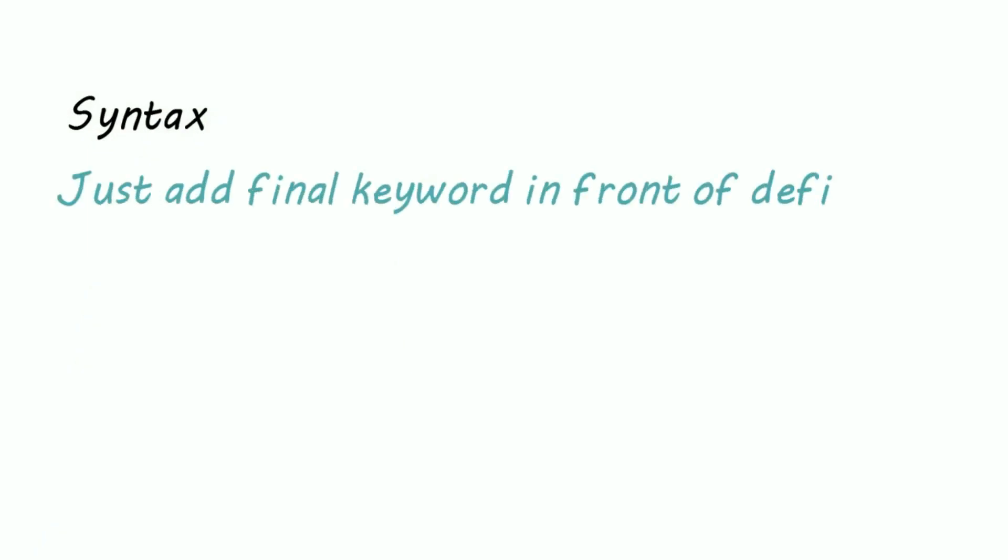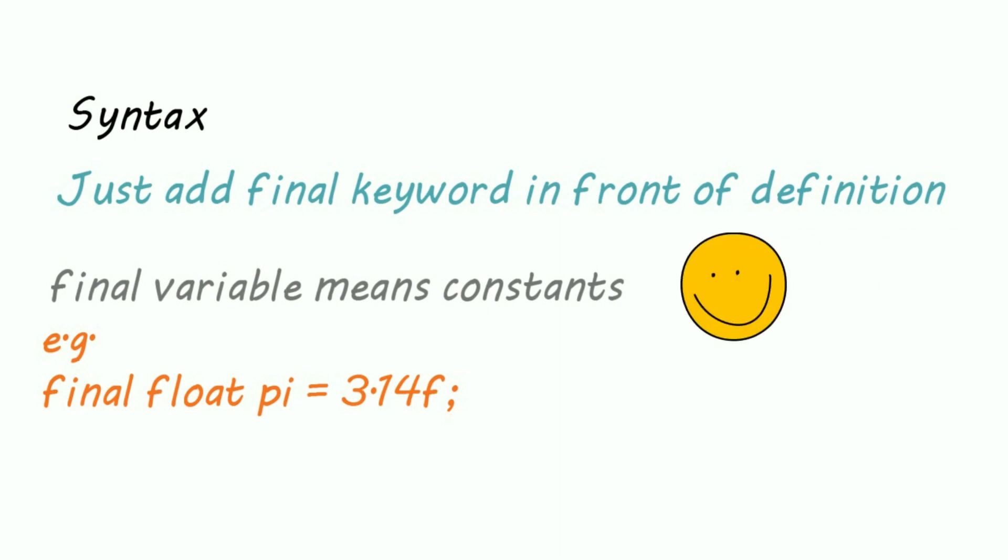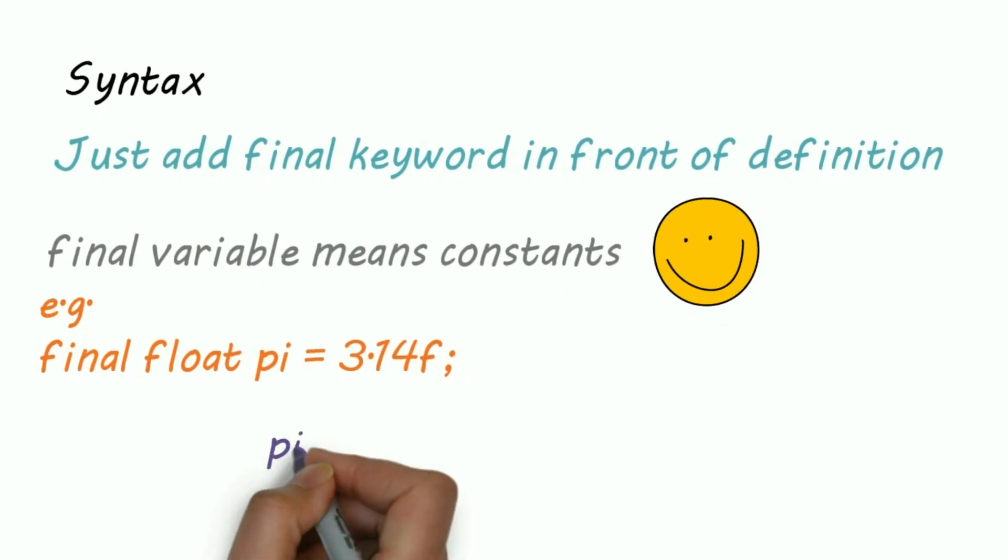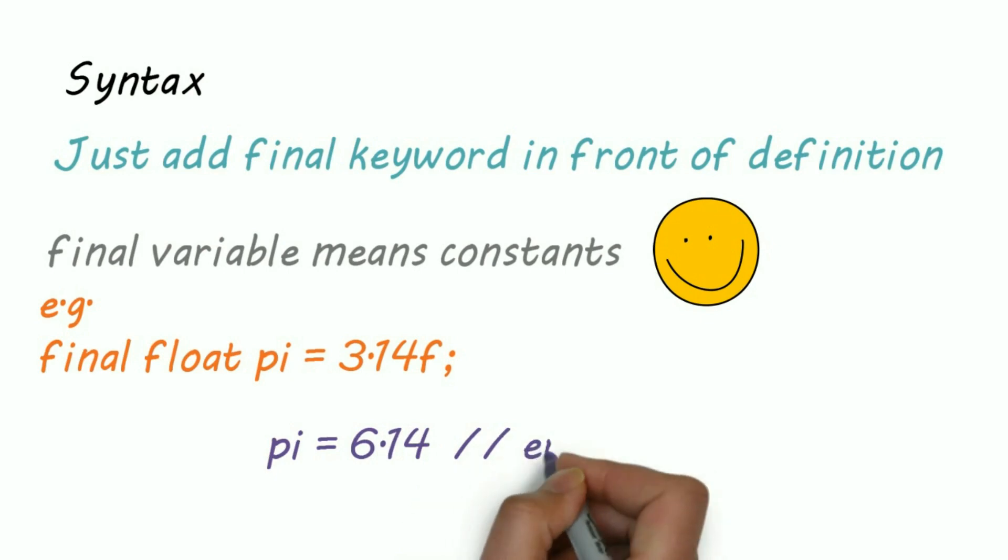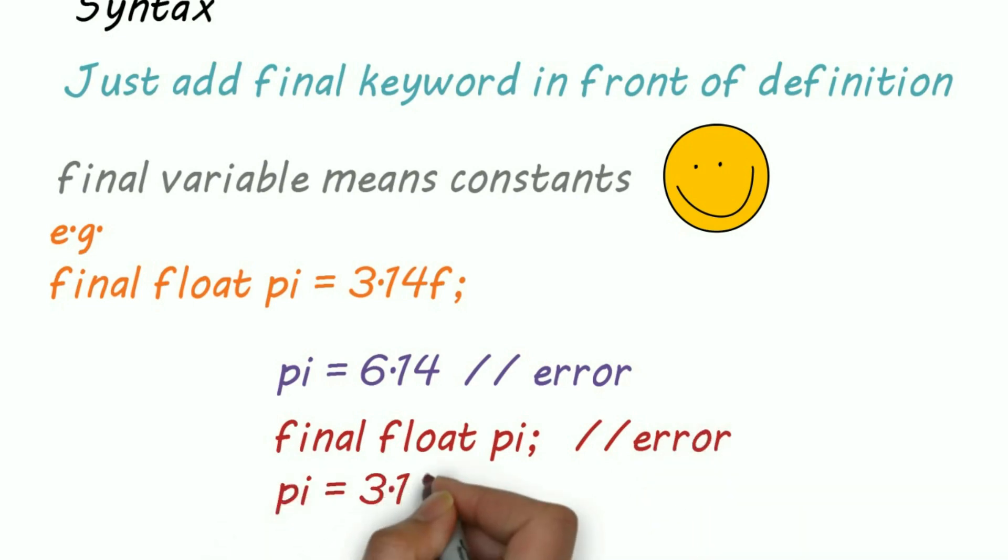For example, final float pi equals 3.14. Final variables means constants, that is, we are not going to change the value of pi. If we try to change it, then we'll get a compilation error.